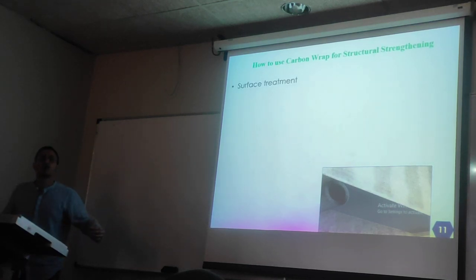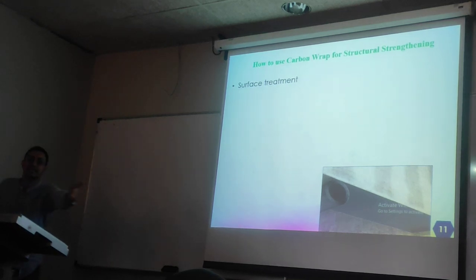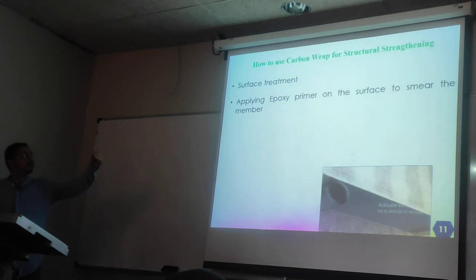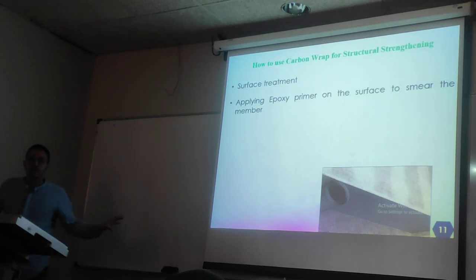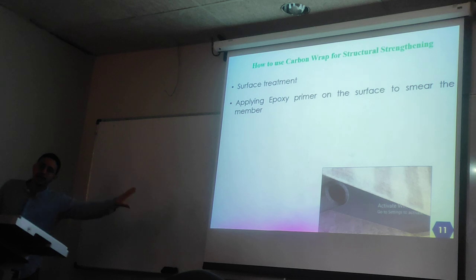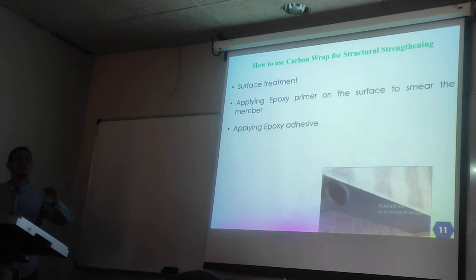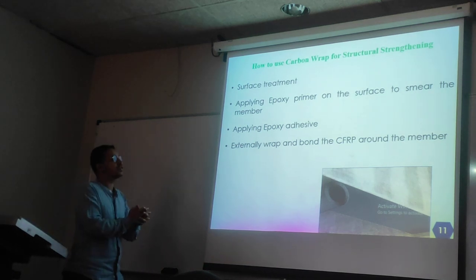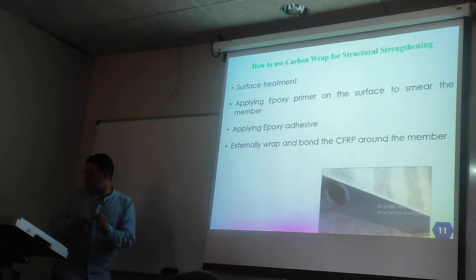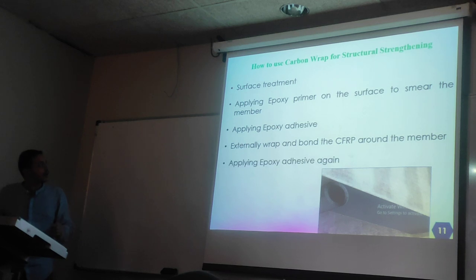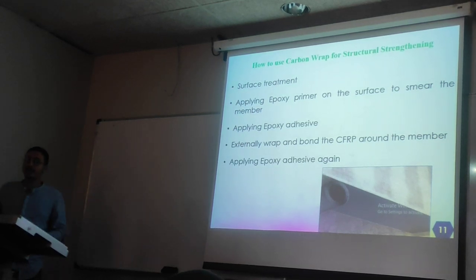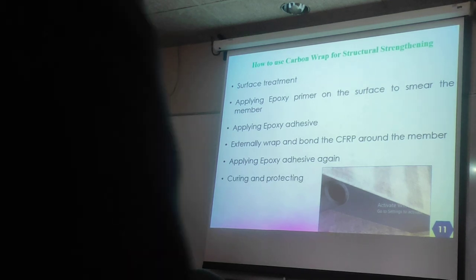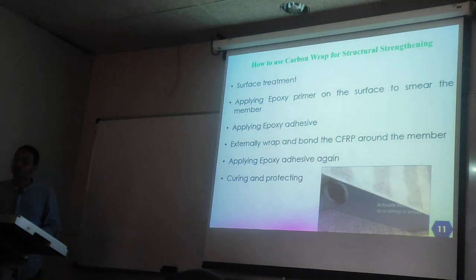Here are the steps for using CFRP for structural strengthening. First, surface treatment and cleaning. Second, applying epoxy primer on the surface to prepare the member before applying the CFRP. Then we apply the epoxy adhesive, after which we externally wrap and bond the CFRP around the member and apply epoxy adhesive again above the CFRP.